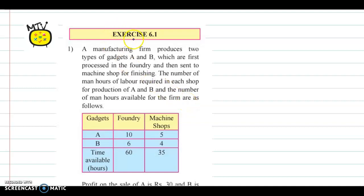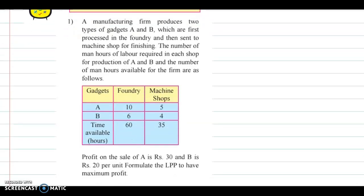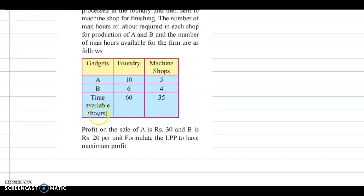Hello and welcome back. We now discuss question number one from exercise 6.1. The question says a manufacturing firm produces two types of gadgets A and B, which are first processed in a foundry and then sent to a machine shop for finishing. The number of man-hours of labor required in each shop for production of A and B and the number of man-hours available for the firm are given in the table. The profit on sale of A is rupees 30 and B is rupees 20 per unit.